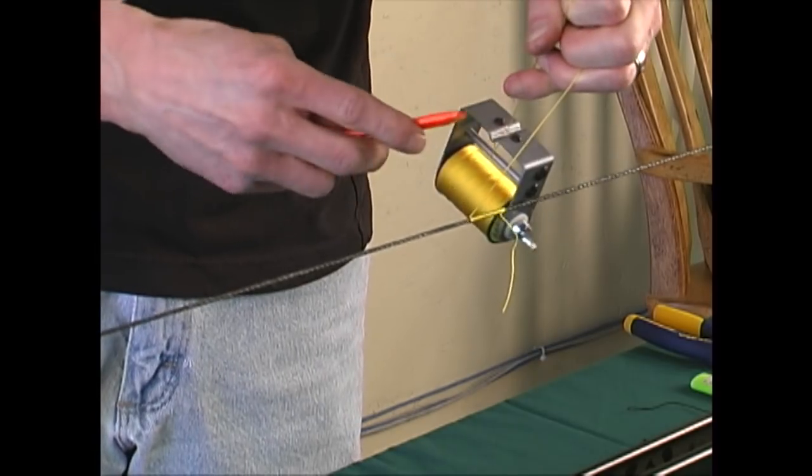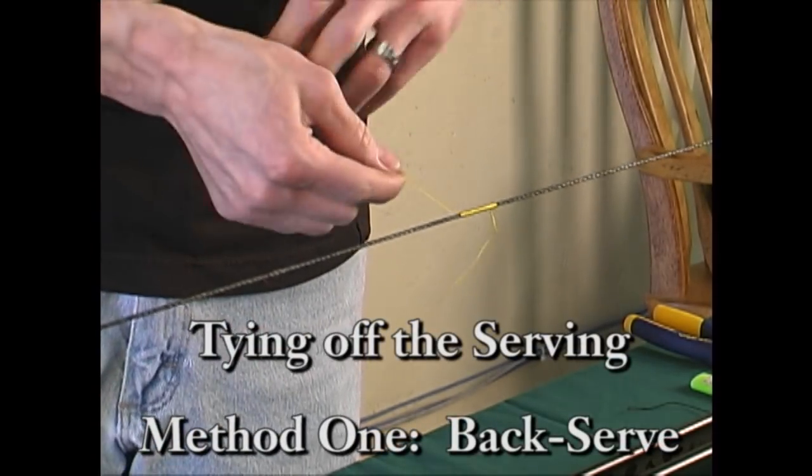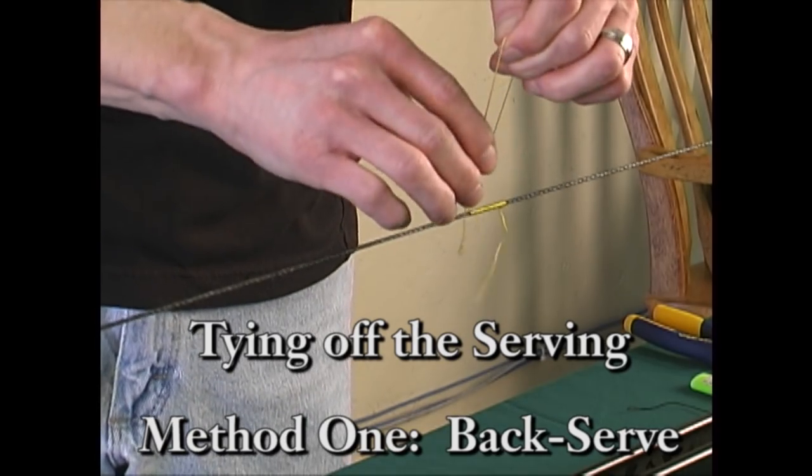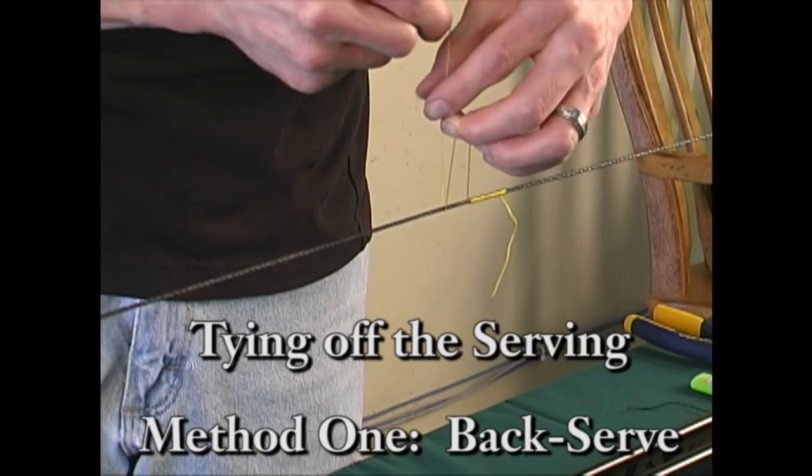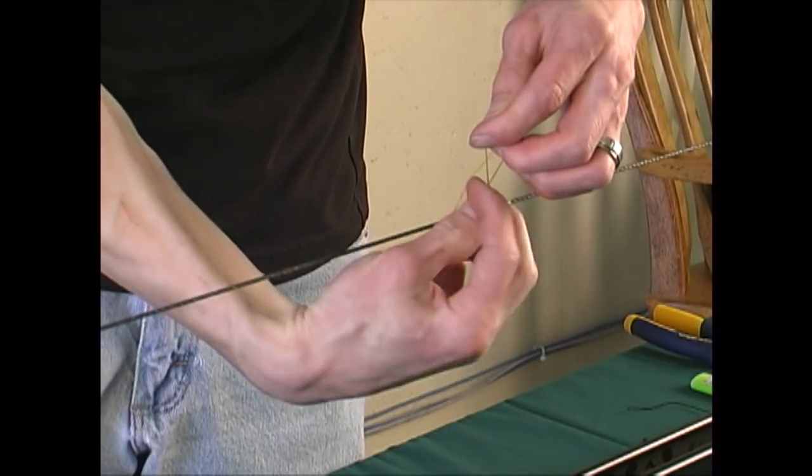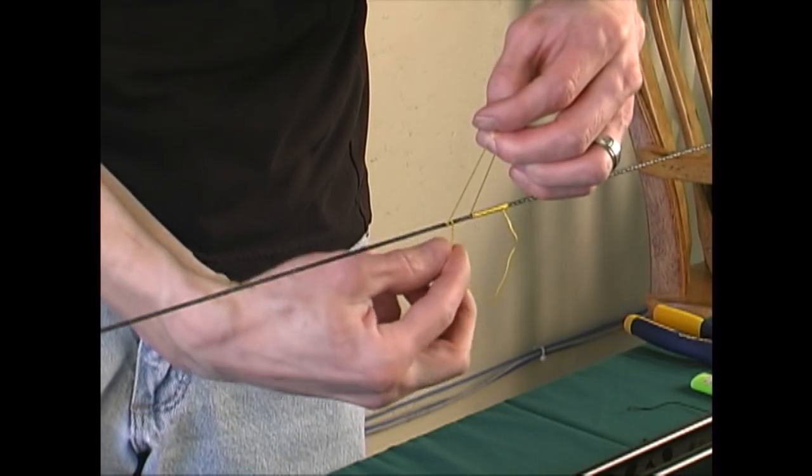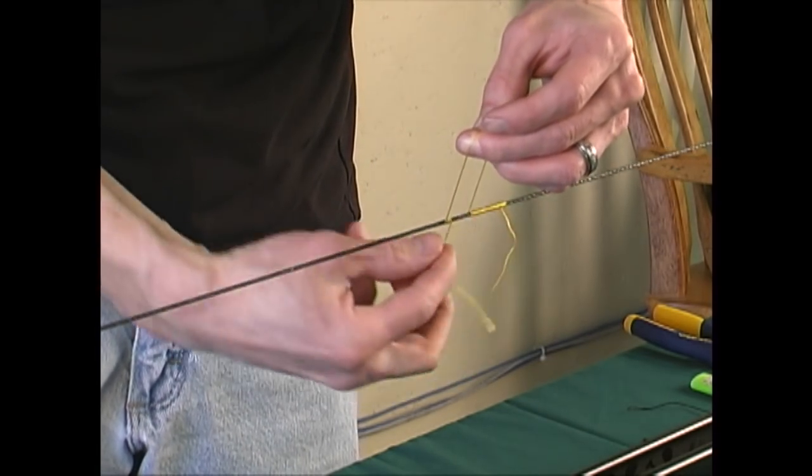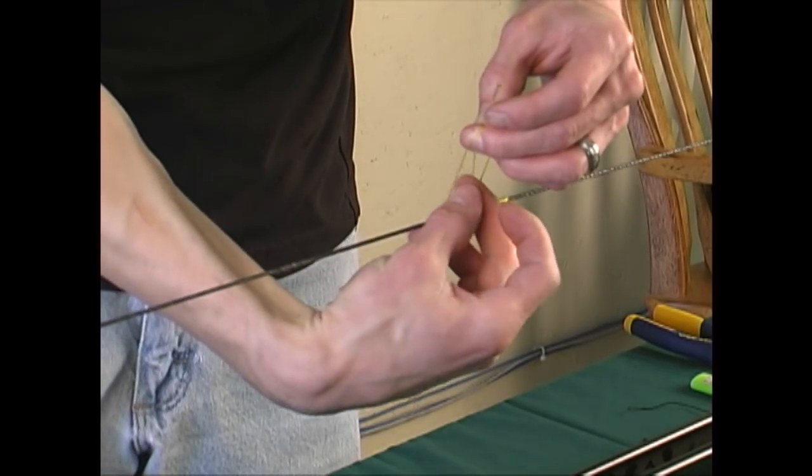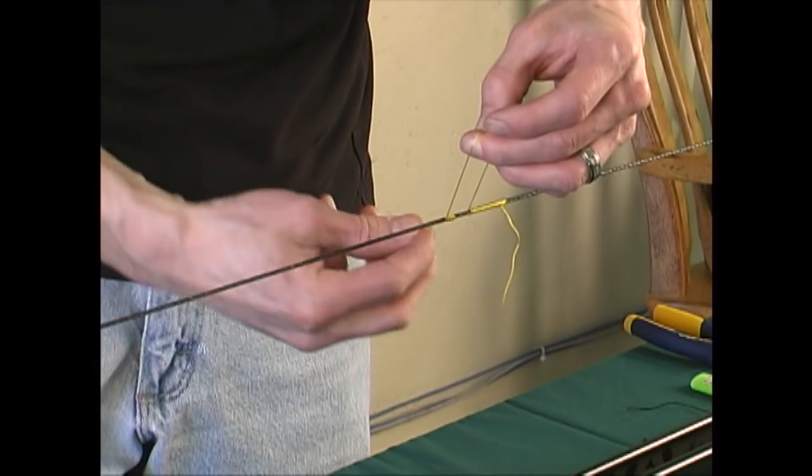There are several methods for how to finish a serving. The first one is called the back serve. Create a loop roughly 4 inches away from the string, and with the tag end of the serving, start wrapping counter to how you have been serving within the loop. You'll want 6 to 8 counter serves around the string this way.